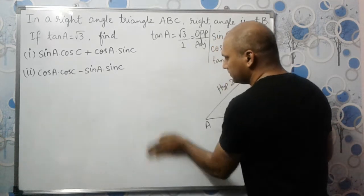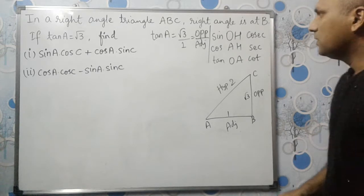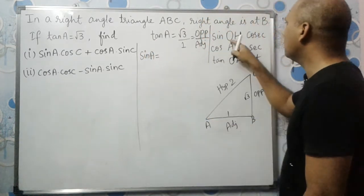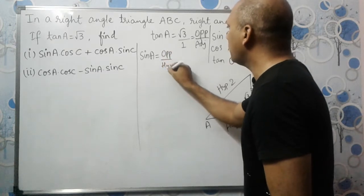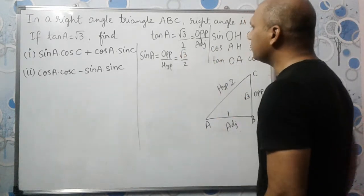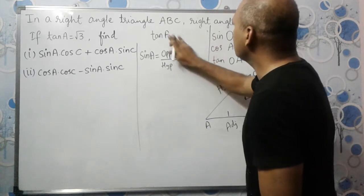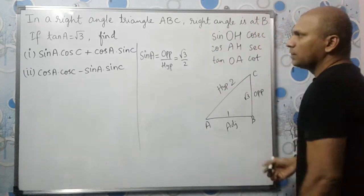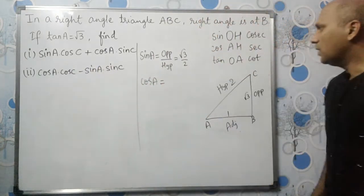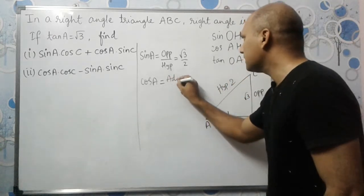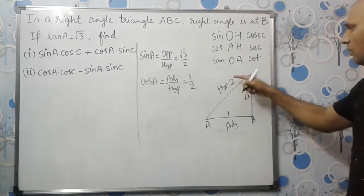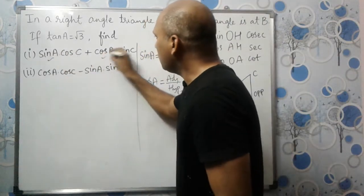Now let us find sin A and cos A. Sin formula is opposite over hypotenuse, so sin A equals root 3 over 2. Cos formula is adjacent over hypotenuse, so cos A equals 1 over 2.